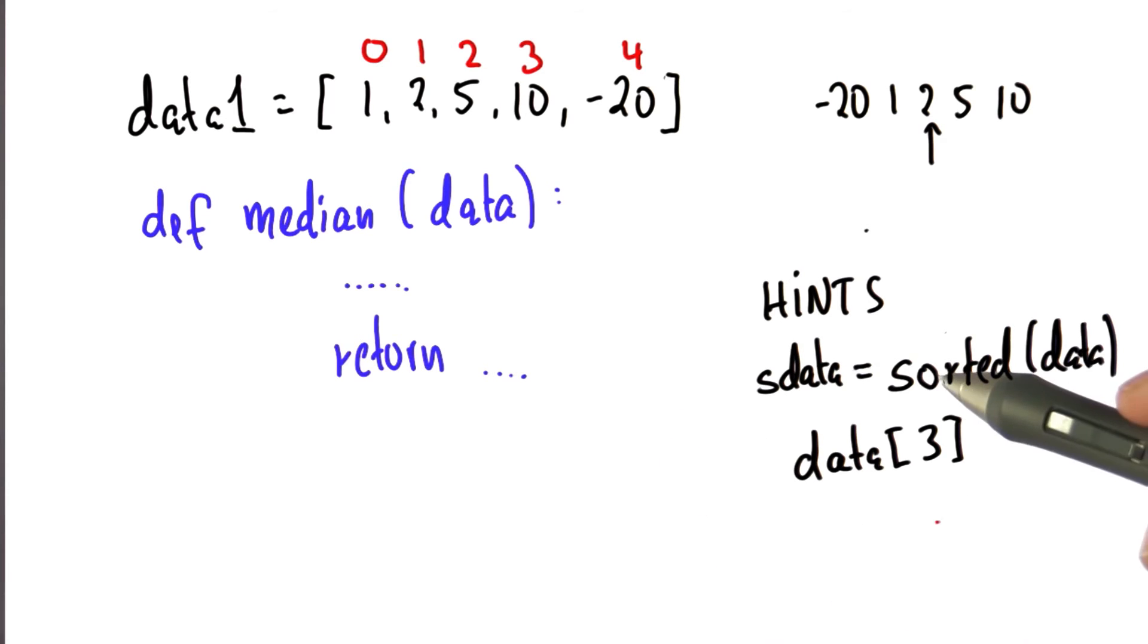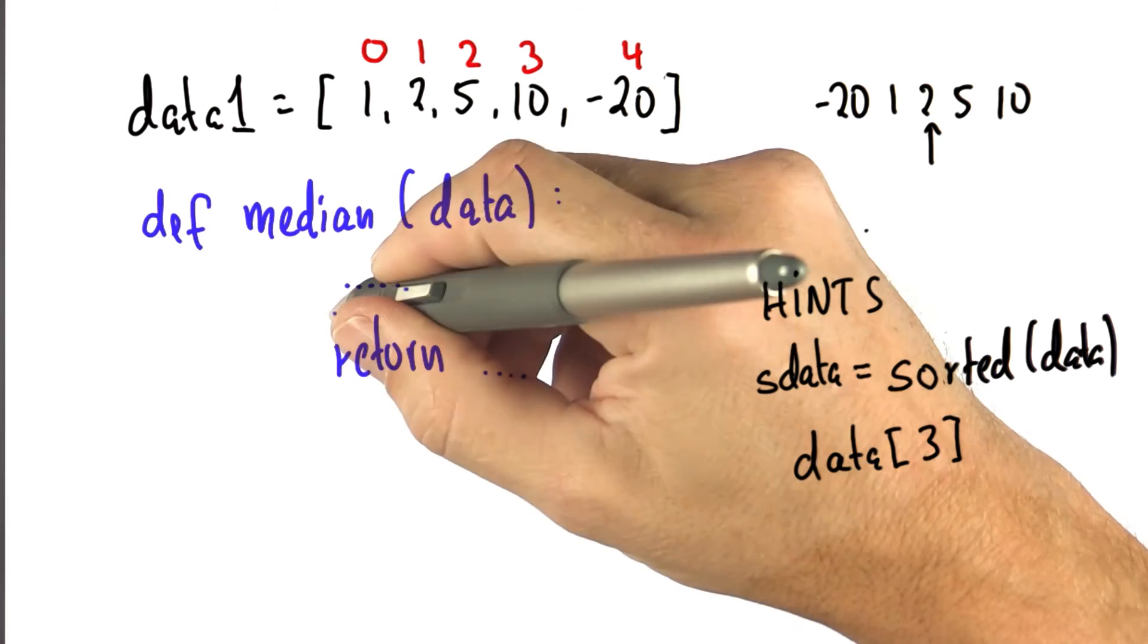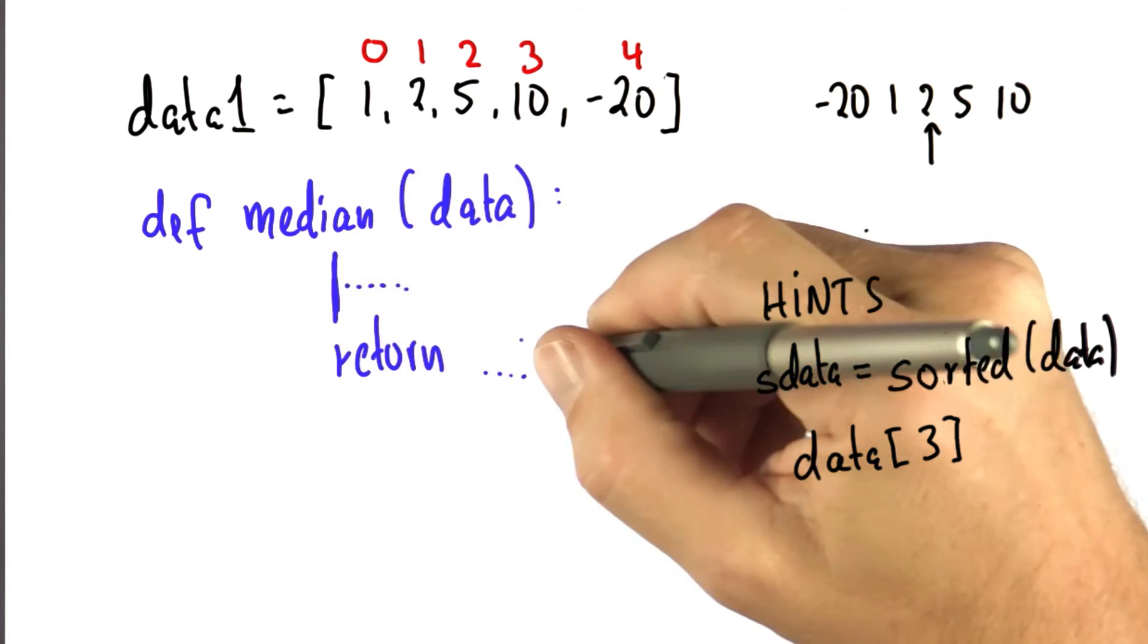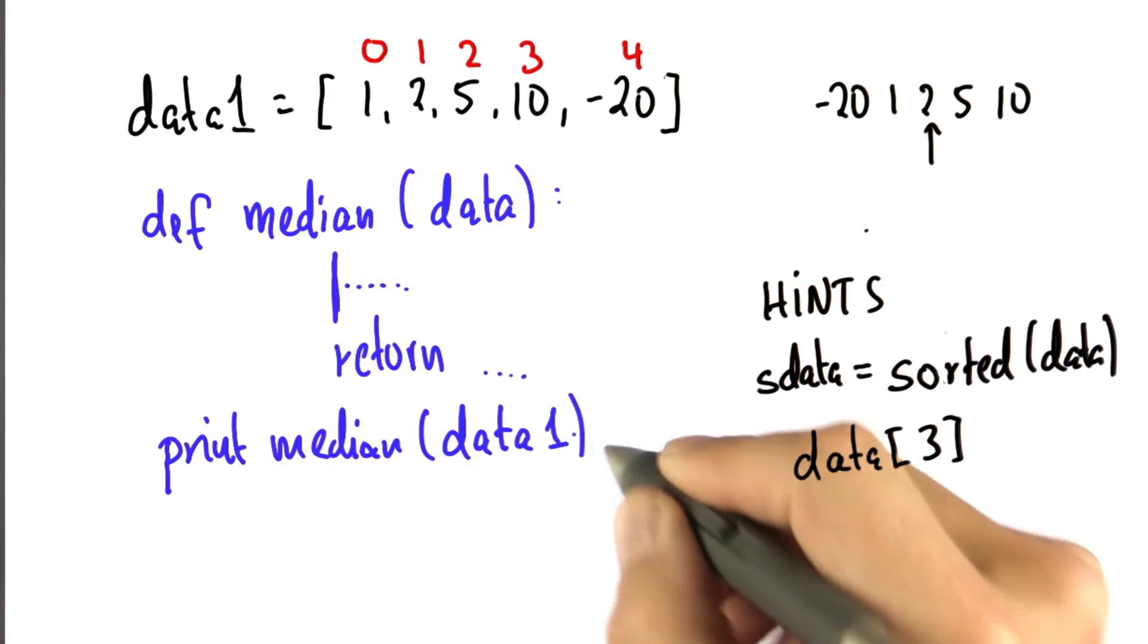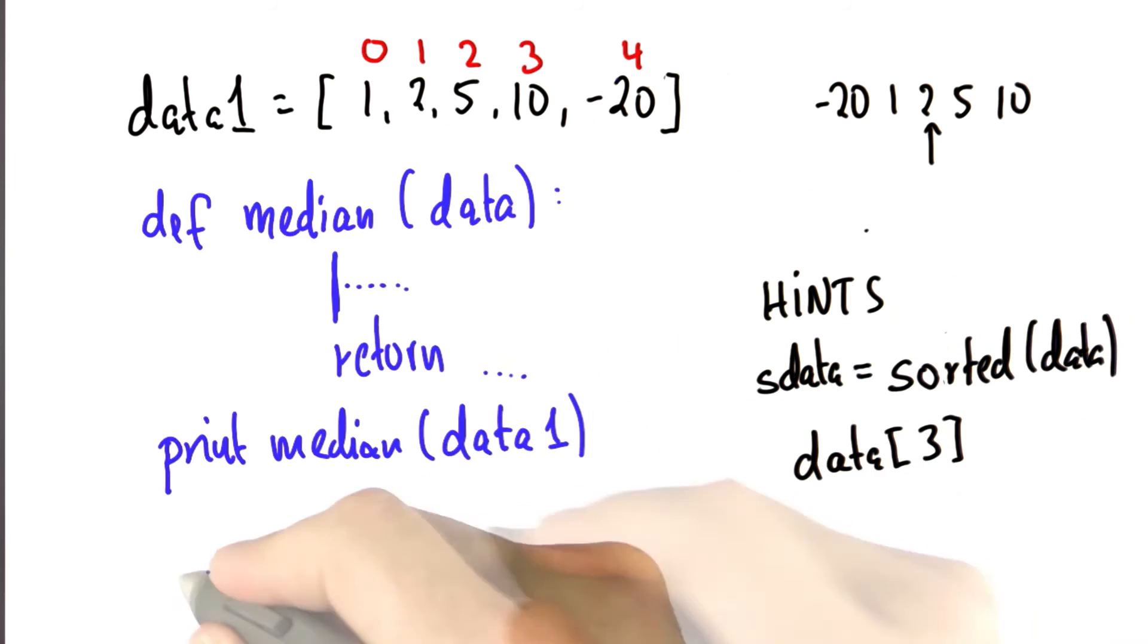With those hints, you should be able to fill in the gaps, write your code over here, return something, and if you print the median of this data sequence over here, then it should output you at two, which is the median.